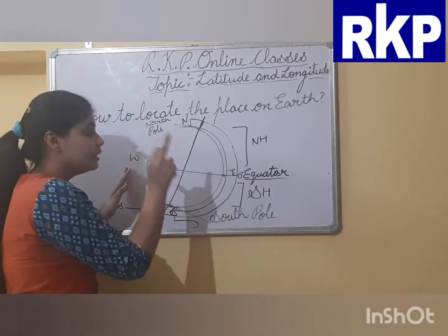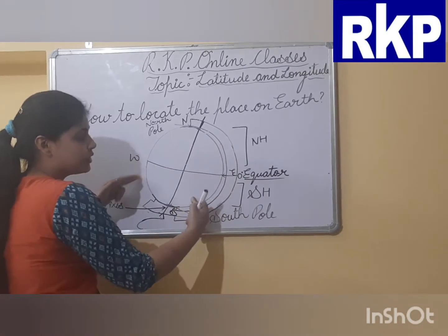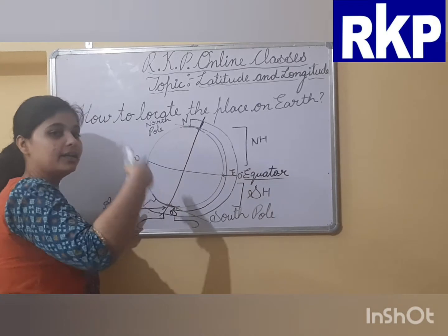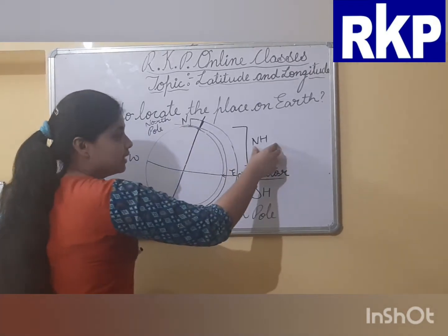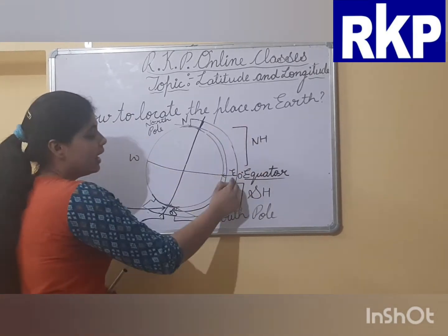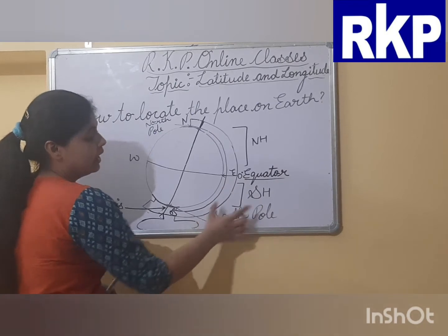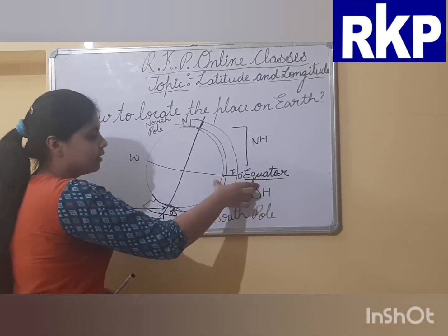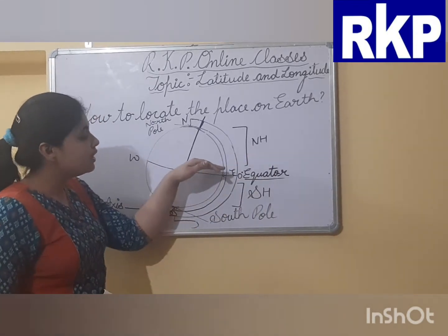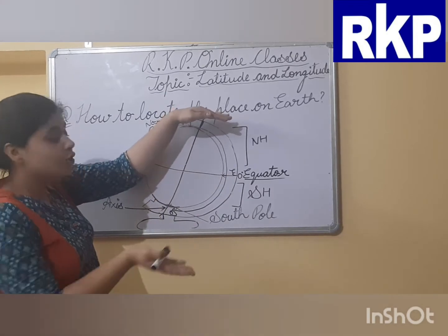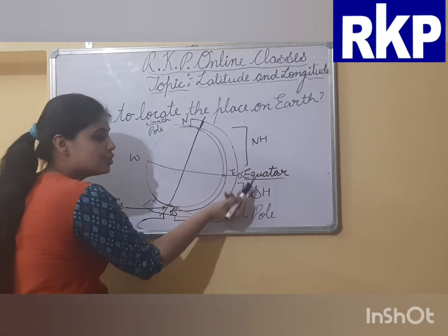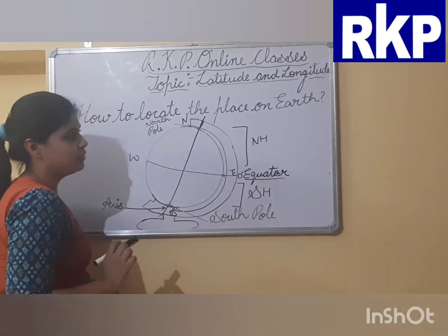The equator divides the earth exactly into two equal halves — the northern hemisphere and the southern hemisphere. The part of the earth which is toward the north of the equator is the northern hemisphere, and the part of the earth which is to the south of the equator is the southern hemisphere.